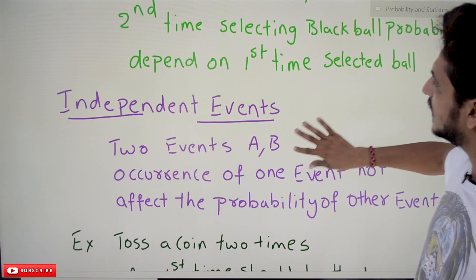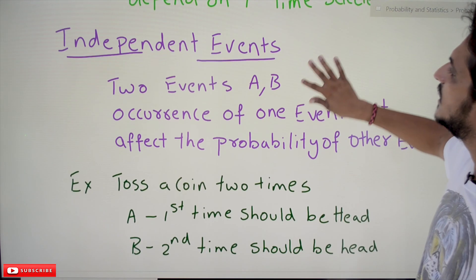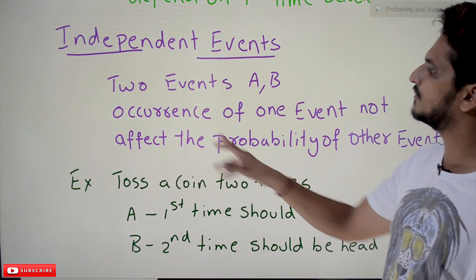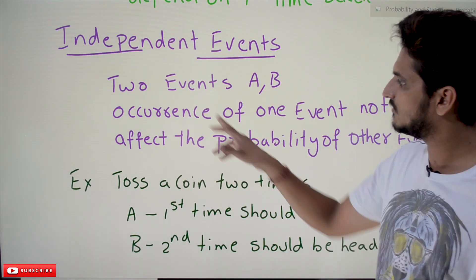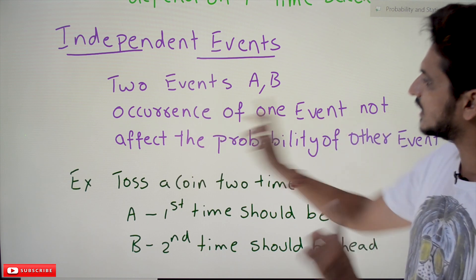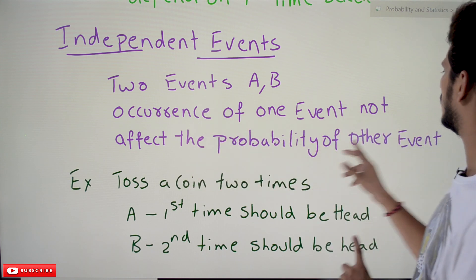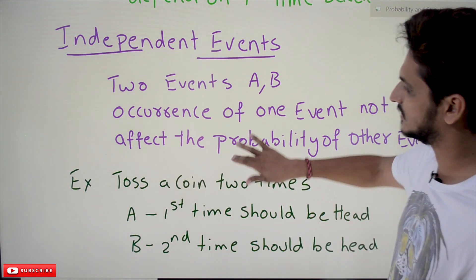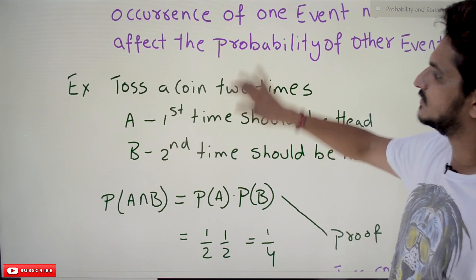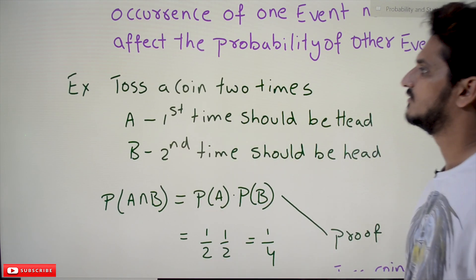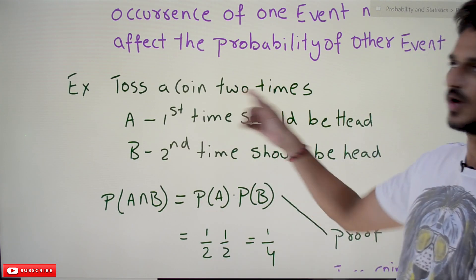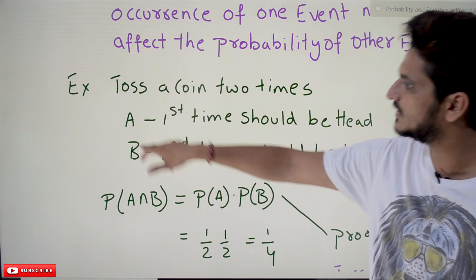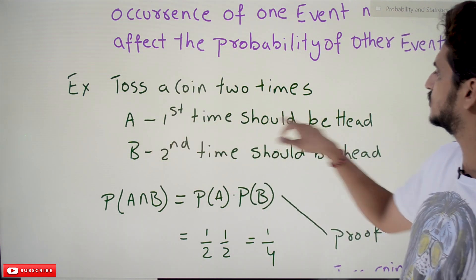Two events A and B are said to be independent events when the occurrence of one event does not affect the probability of the other event. The best example to understand independent events is tossing a coin two times. Event A says the first toss should be a head; event B says the second toss should be a head.